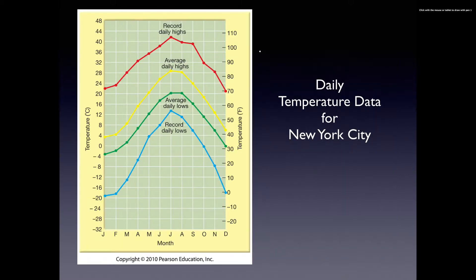The other thing we can do with climate data is aggregate the weather data from different areas and display it so that we have some idea of what to expect. What you're looking at right here is called a climatograph, and it shows the temperature as a function of time for what we typically expect throughout a year — this one is for New York City. You can see that we have our average daily highs and our average daily lows, which follow a trend through the year where it's warmer in the summertime and cooler in the wintertime.